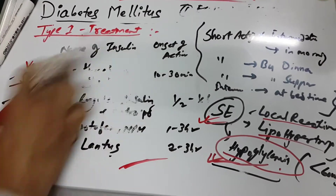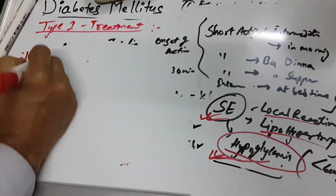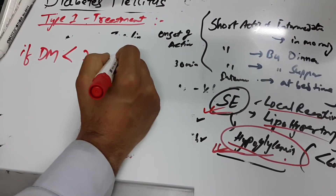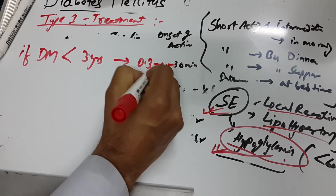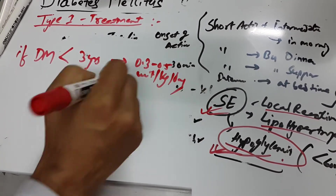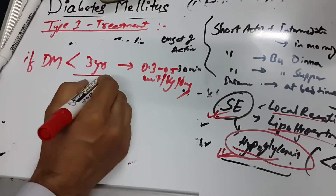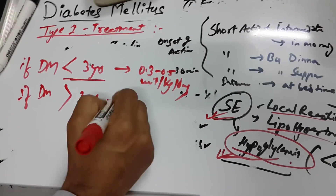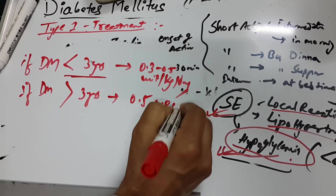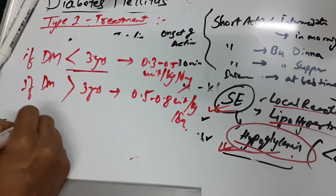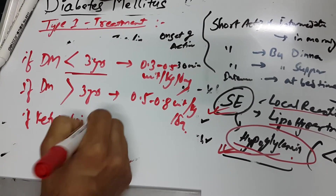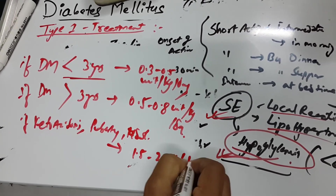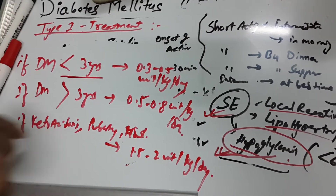Regarding dosage in Type 1 diabetes: if the diabetes is of less than 3 years duration (new onset), the dosage is 0.3 to 0.5 units per kg per day. If diabetes is more than 3 years duration, the dosage is 0.5 to 0.8 units per kg per day. If the patient has ketoacidosis, or is in puberty or adolescence, give 1.5 to 2 units per kg per day.